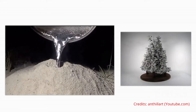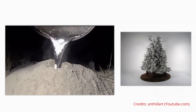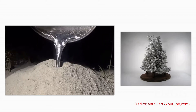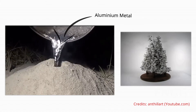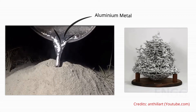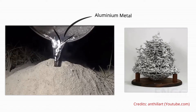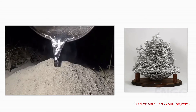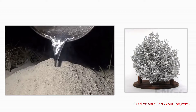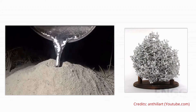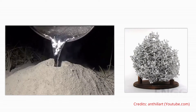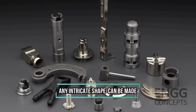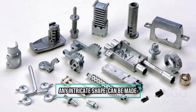In this demonstration, molten aluminium is poured into an ant colony. The aluminium enters easily into most of the small sections of the ant colony. To watch this video, follow the link in the description. Any intricate shape, whether internal or external, can be made using the casting process.